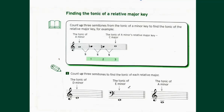Let's apply this to the first question: count up three semitones to find the relative major. They have given us a minor key starting on D. From D, go up one semitone to E flat, then E flat up to E natural (add a natural sign to cancel the flat), and then the third semitone up is F. So D minor's relative major is F major.